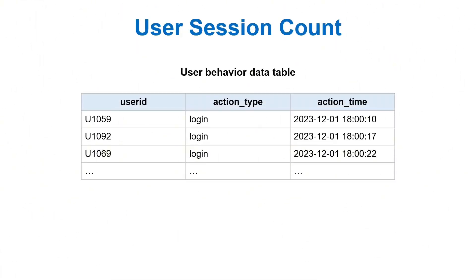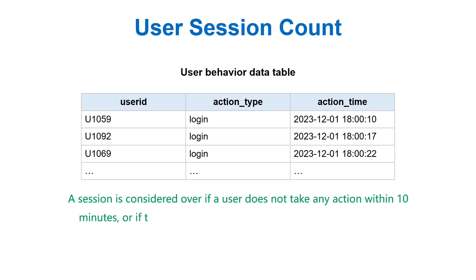User Behavior Data Table. A session is considered over if a user does not take any action within 10 minutes, or if they do not log in within 5 minutes after logging out. Calculate the number of sessions for each user.